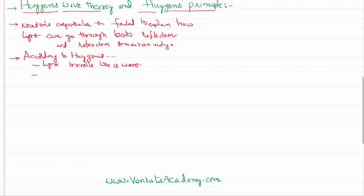But there is a big problem in seeing light as a wave. At the time Huygens proposed the wave theory, the only wave familiar to us was the mechanical wave, which obviously needs a medium for propagation. Since light is traveling all the way from the sun through space to the earth, Huygens had to propose a medium through which the light is traveling.